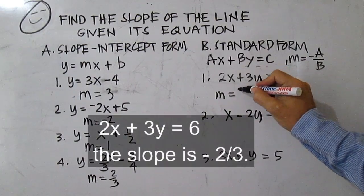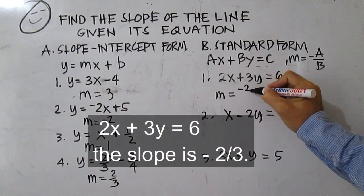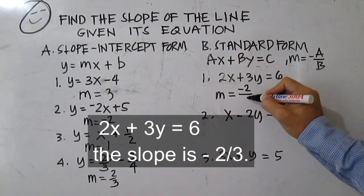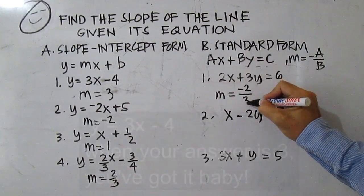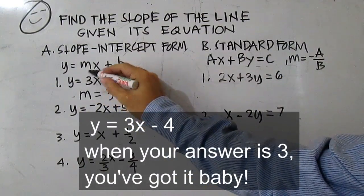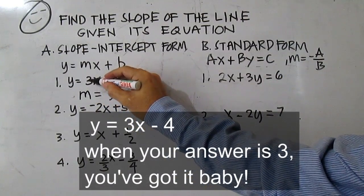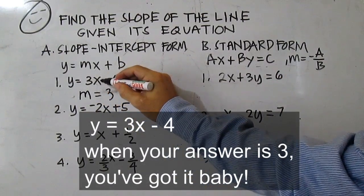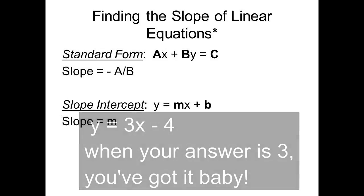For 2x plus 3y equals 6, the slope is negative 2 over 3. For y equals 3x minus 4, the slope is 3. You got it, baby!